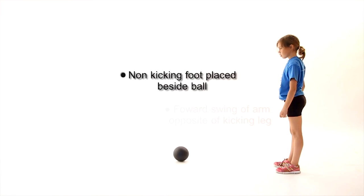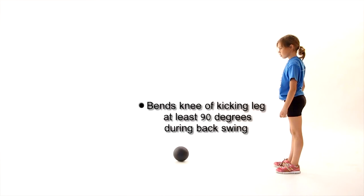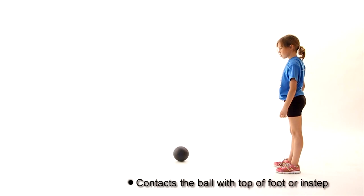The non-kicking foot is placed directly beside the ball. She bends her knee of her kicking leg at least 90 degrees during the backswing. She contacts the ball at the top or the side of her foot.